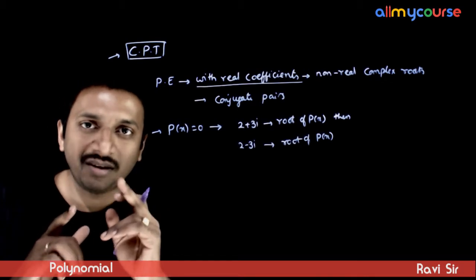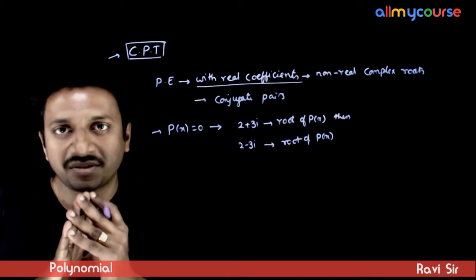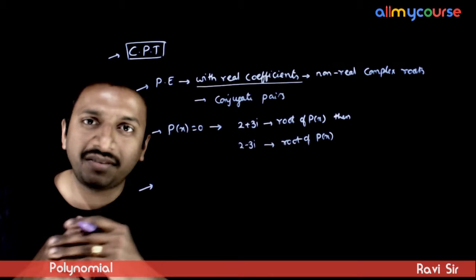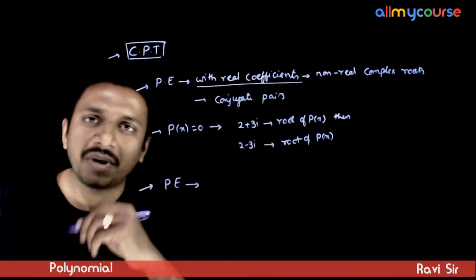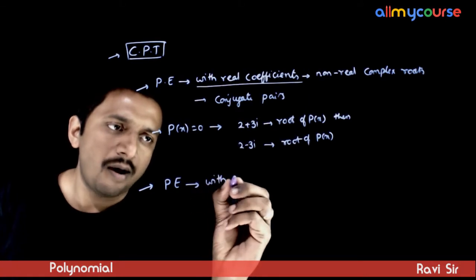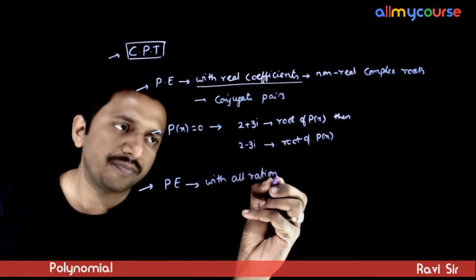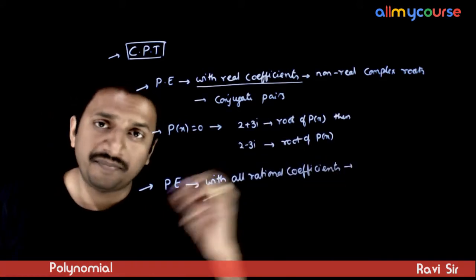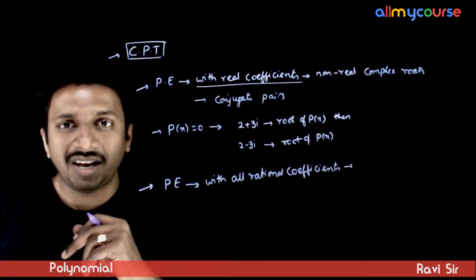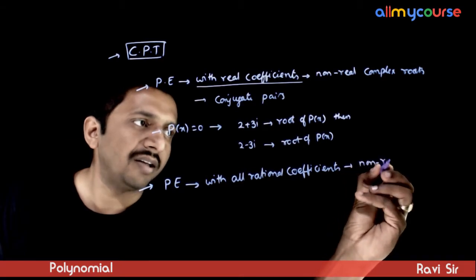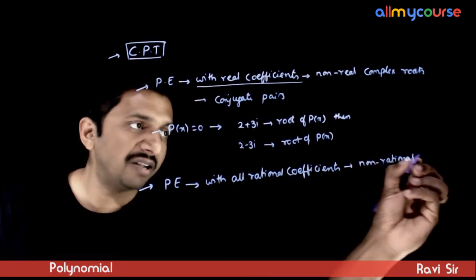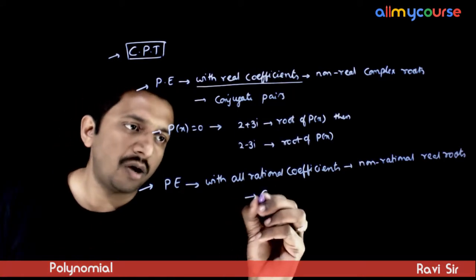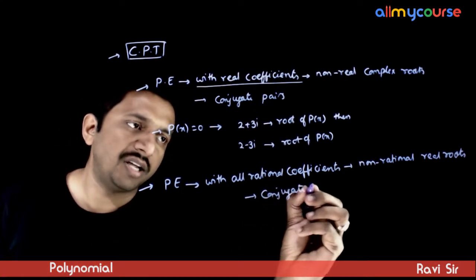The nonreal complex roots always occur in conjugate pairs. A similar theorem applies when you have a polynomial equation with all rational coefficients: the non-rational, that is irrational, real roots always occur in conjugate pairs.